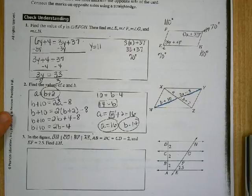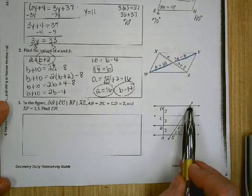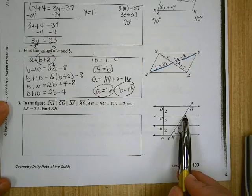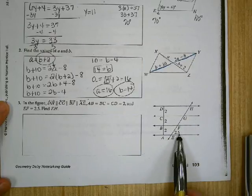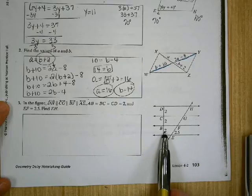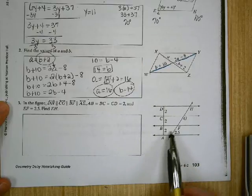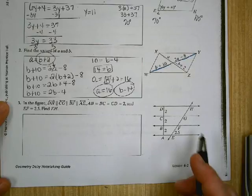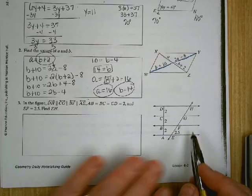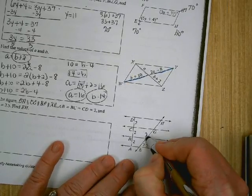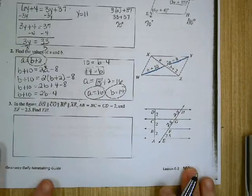Okay, last example. In this figure, DH is parallel to CG. It's parallel to BF. It's parallel to AE. And they tell you right here that these parallel lines cut off equal segments. So if they cut off equal segments on this transversal, they'll do the same on this transversal. So if this is 2.5, this is 2.5, and this is 2.5.